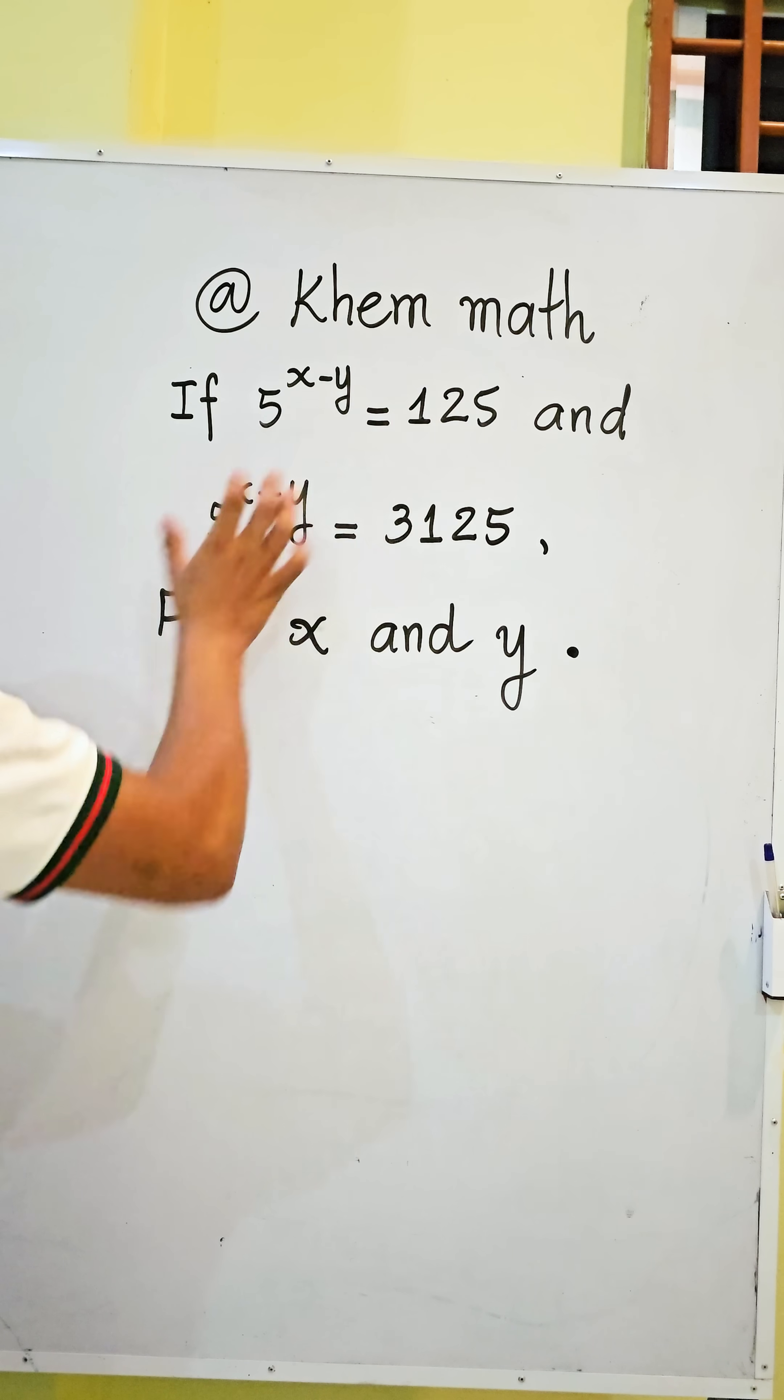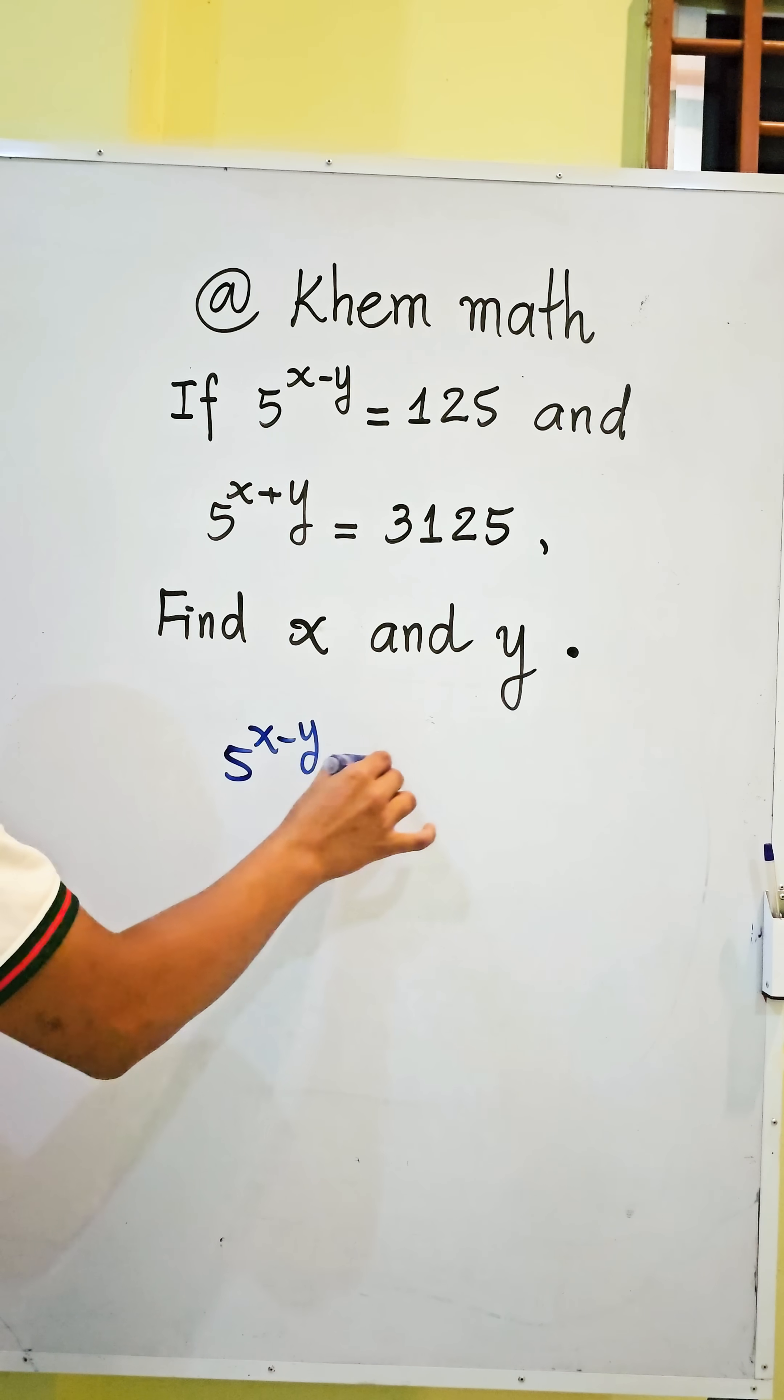First, we use this equation: 5 power x minus y equals 125. 125 equals 5 power 3.